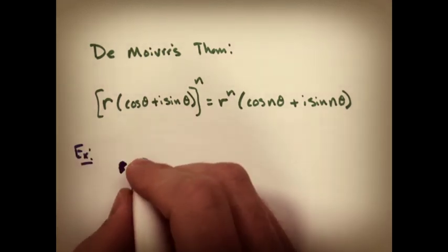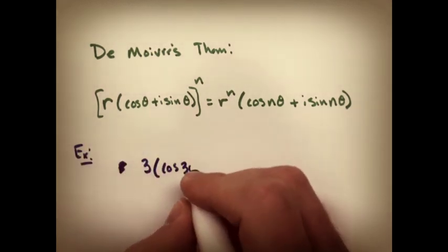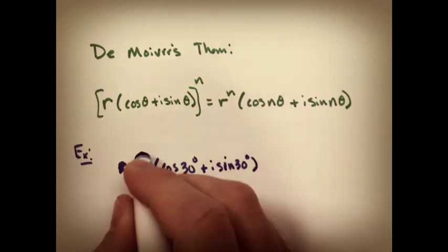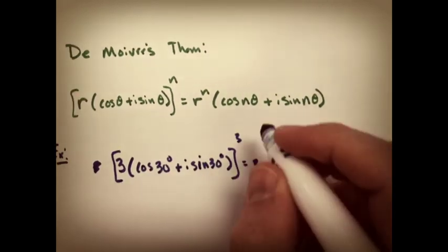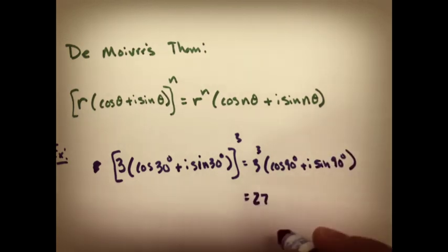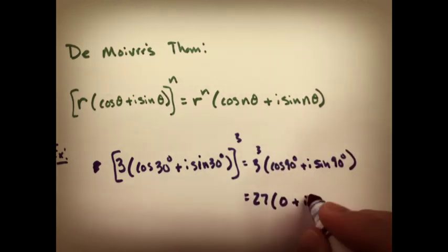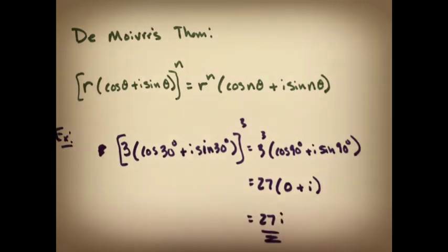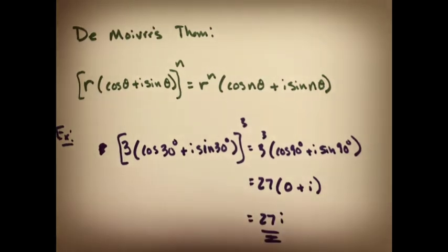If I looked at a real quick example, if I gave you a polar form, 3 cosine 30 sine 30, and took it to the third power, you take 3 to the third power, you multiply the 30 by 3, and you can see you end up with 27i. So, that's powers of complex numbers.